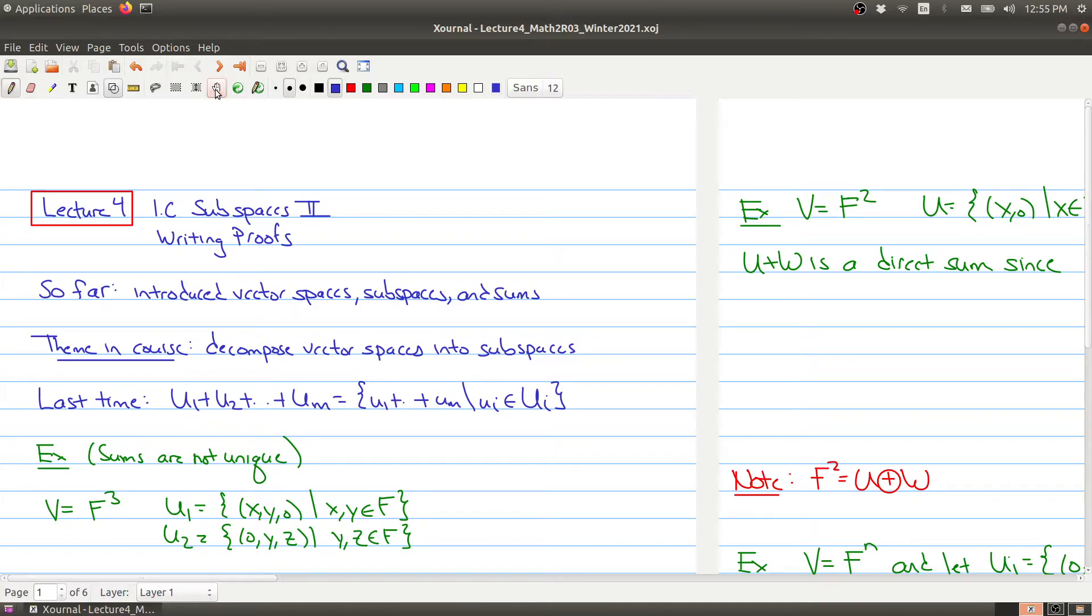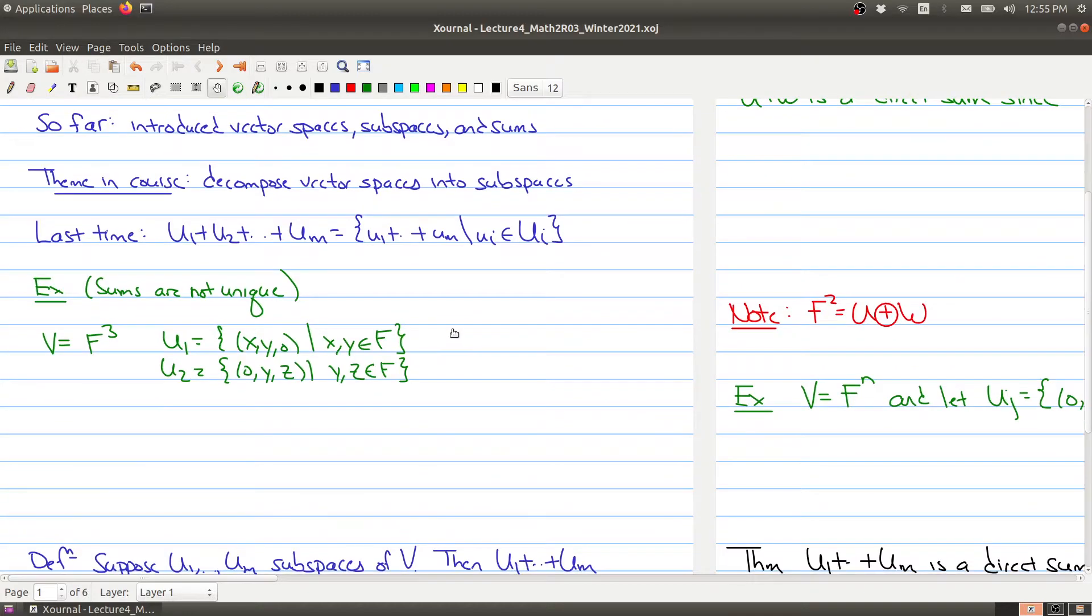So here's an example of what I mean right here. So let's say we're looking at a vector space over F^3, so we're looking at all three tuples. You might want to visualize this as R^3. And U_1 is the subspace of all x and y, where x and y can be free, but the last coordinate is zero. And U_2 is the set of all y and z in the second and third coordinate, but the first coordinate is zero. Now, it's not too hard to check that if you take the sum of these two vector subspaces, you actually get the whole space itself.